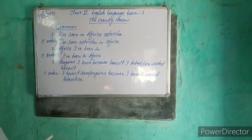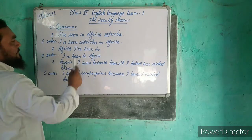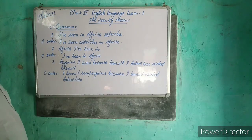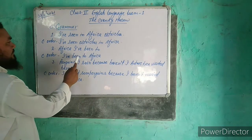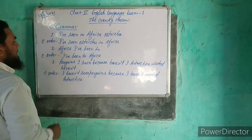The second sentence is: Africa I have been to. It is not in correct order. The correct order is: I have been to Africa.